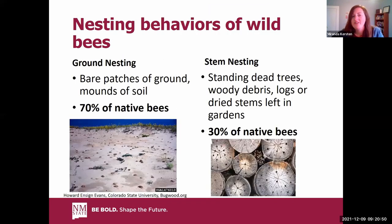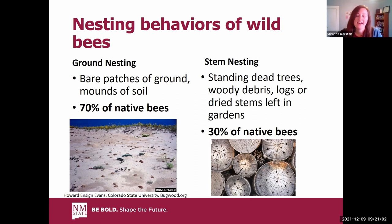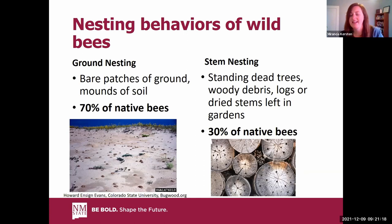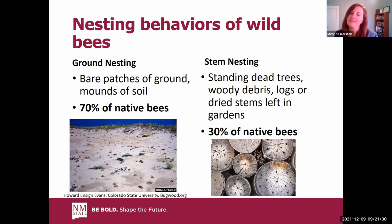Seventy percent of our wild bees are ground-nesting, building their nests in patches of ground or mounds of soil. This picture shows a sandy area with a lot of those mounds. While a lot of these bees are solitary, you may see aggregations of nests in good nesting sites — sometimes even along dirt roads. The rest of our bees are stem-nesting, building their nests in dead trees, woody debris, logs, or dry stems left up in the garden.